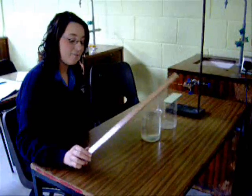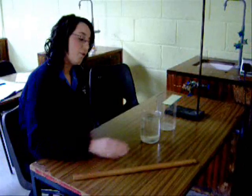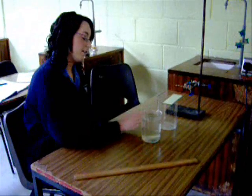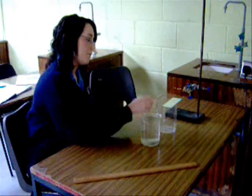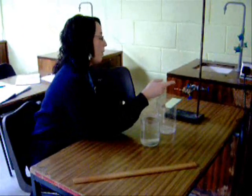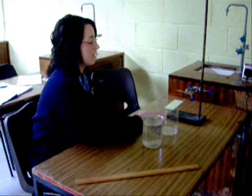The aim of this experiment is to find the refractive index of water using a rail and a parallax method. The equipment needed includes a half-meter stick, water, a container, a mirror, two pins, a cork, and a retort stand.